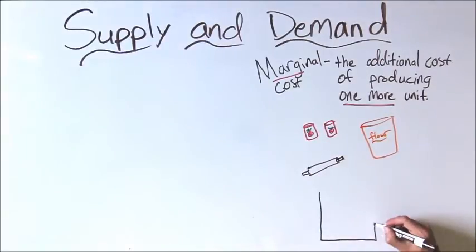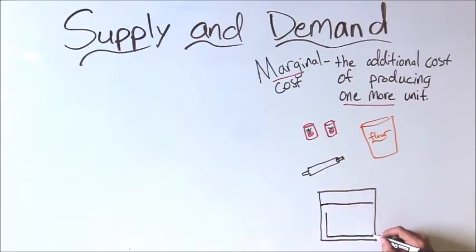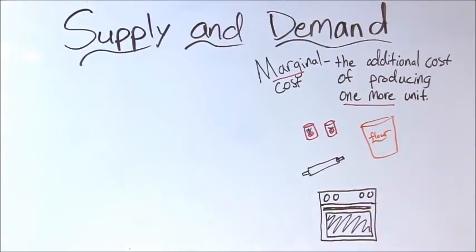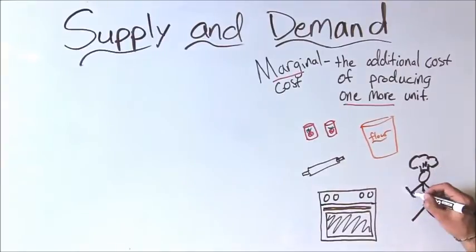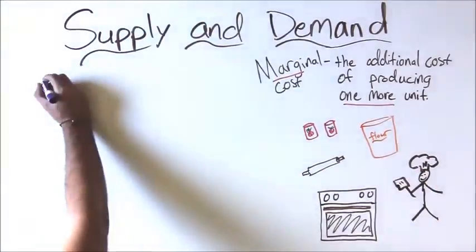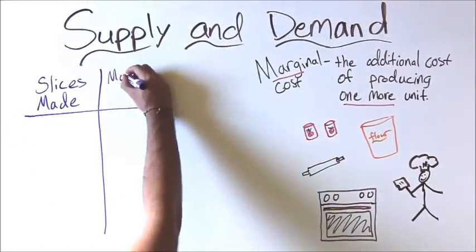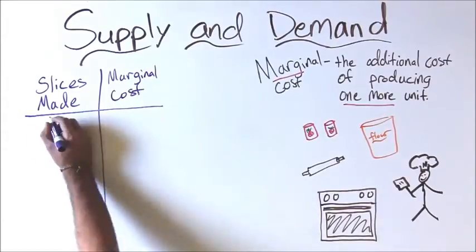This time, we will compare the number of slices of pizza made to how much additional or marginal cost it takes to make each slice. For every slice of pizza made, the marginal cost increases by one dollar. This is because of the law of diminishing marginal returns. Basically, this law says that as you increase one factor of production, such as the number of workers you have, their average productivity decreases.